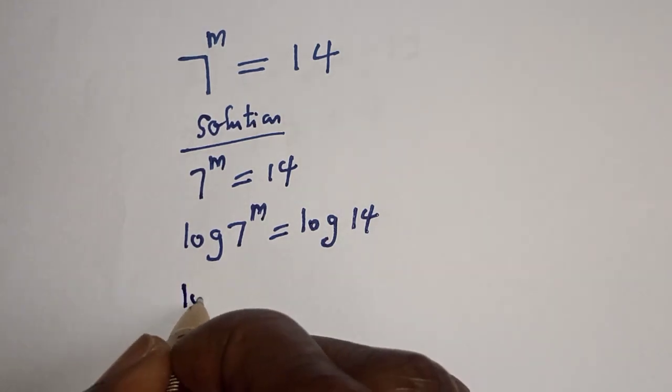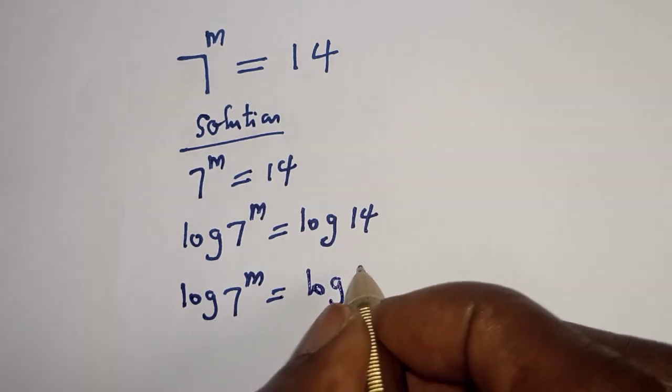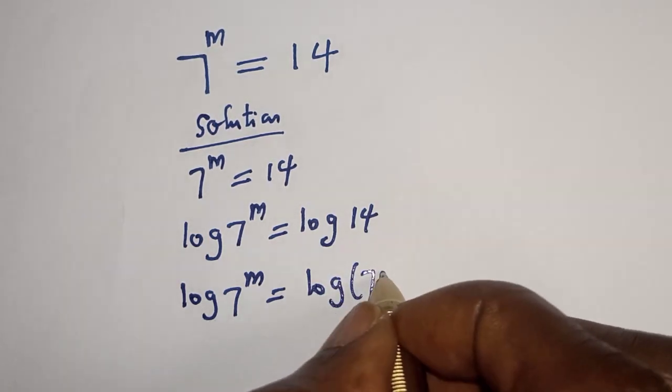Then, log 7 raised to power m is equal to log 14, which is 7 times 2.